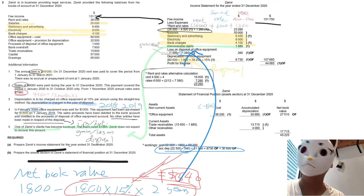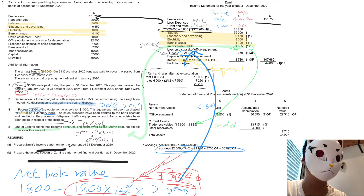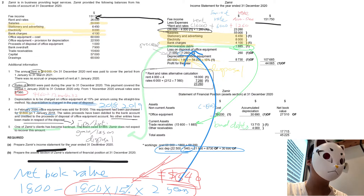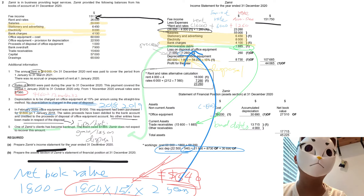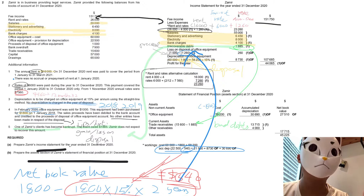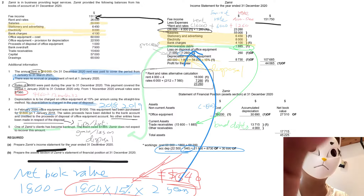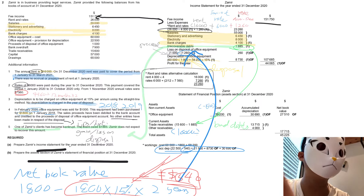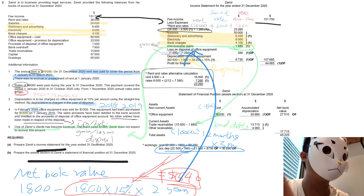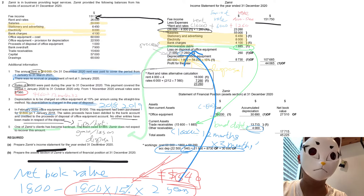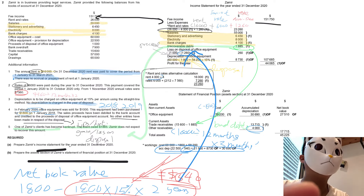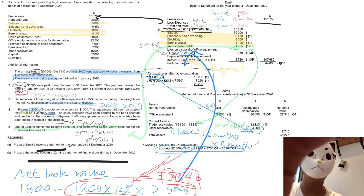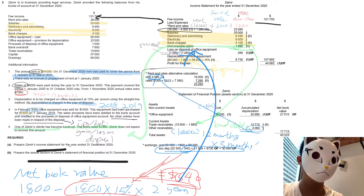For trade receivables, you cannot just copy the figure — remember there are bad debts, so we have to deduct them. For other receivables, I don't like that term; it's actually about prepayment. There is a prepaid rent: 16,000 divided by 12 months, times 3 months (a quarter) = 4,000. So 4,000 goes under other receivables as a prepayment.